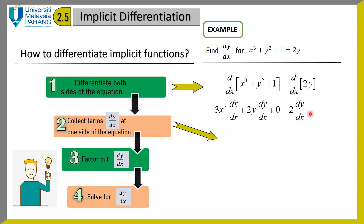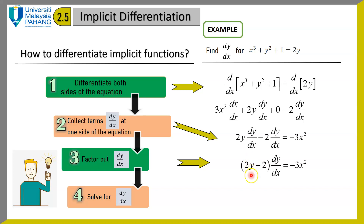Next, collect the terms which consist of dy/dx on the left hand side, and bring the rest to the right hand side. Then factor out dy/dx, so you have (2y minus 2) dy/dx on the left and minus 3x squared on the right. Finally, simplify to get dy/dx equals negative 3x squared over (2y minus 2).